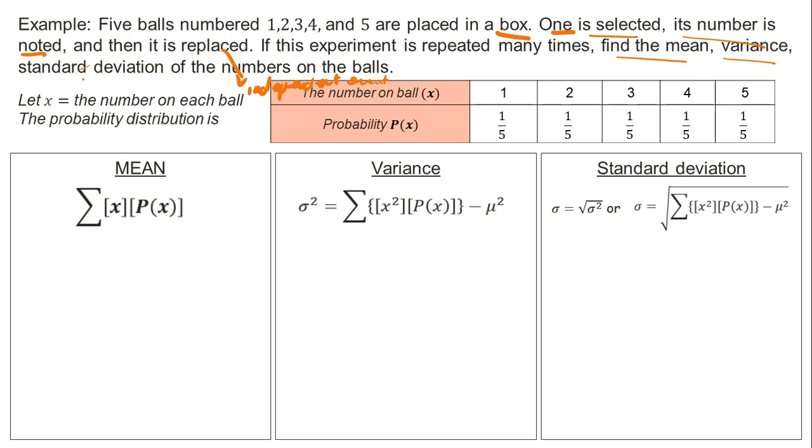As you can see in our probability distribution table, x is the number on each ball, and p(x) is the probability of the number on each ball. All of them, the probability of getting them is 1 over 5. Why? Because we are returning them. When we get 1, we note it but we return it back. So the favorable outcome and total number of outcomes will not change because it is independent.